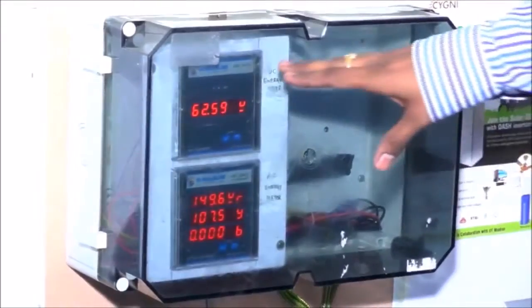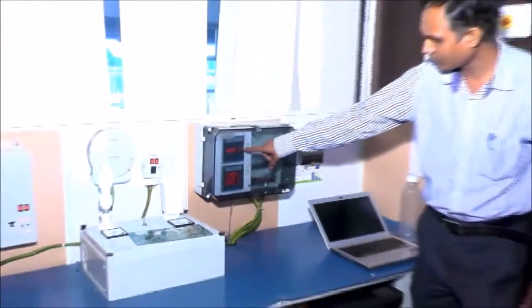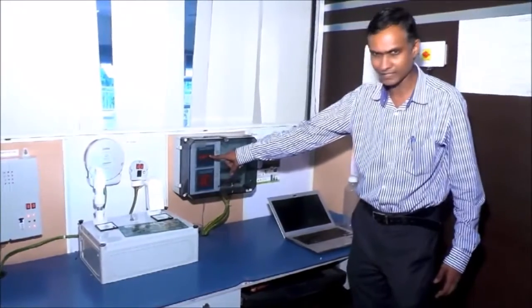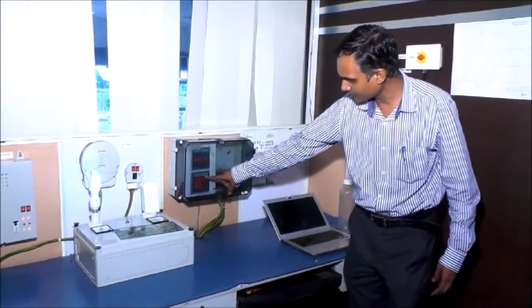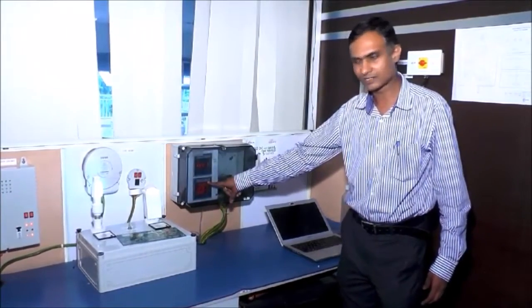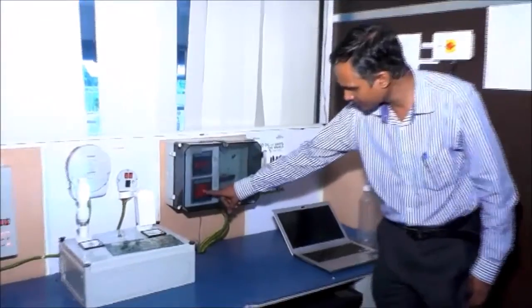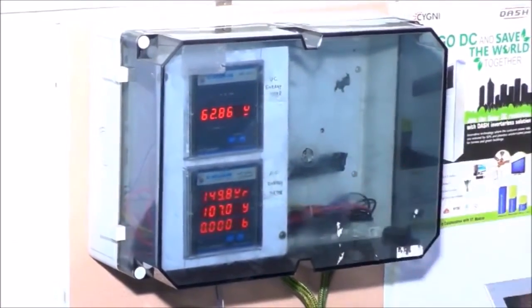This gives a power variation between different systems. The power which is shown on this particular meter, the 62.8 watts is for the DC system. The 149 watts is for the regular AC system which is a non-energy efficient AC system. And the 106.9, this power consumption is for the energy efficient AC system.